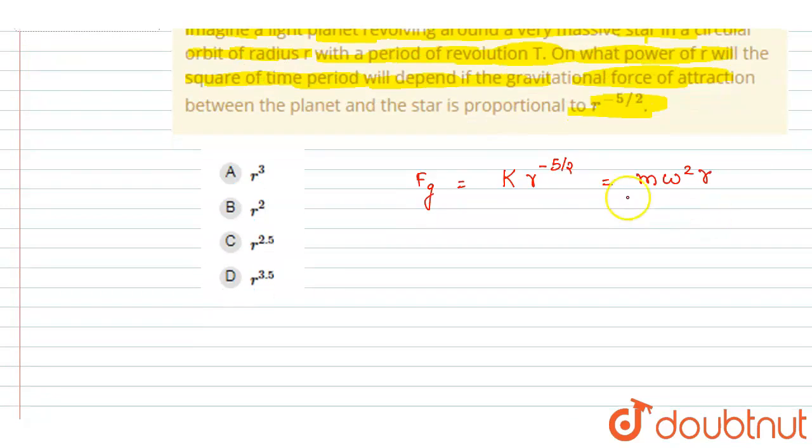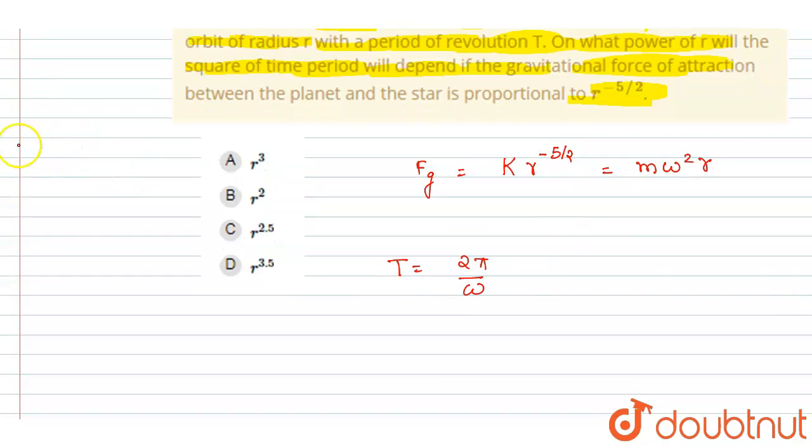Now from here you get the proportionality relation with omega. And you know that the time period is 2π by the angular speed omega, so you can put this here and get the relation between the time period and r.